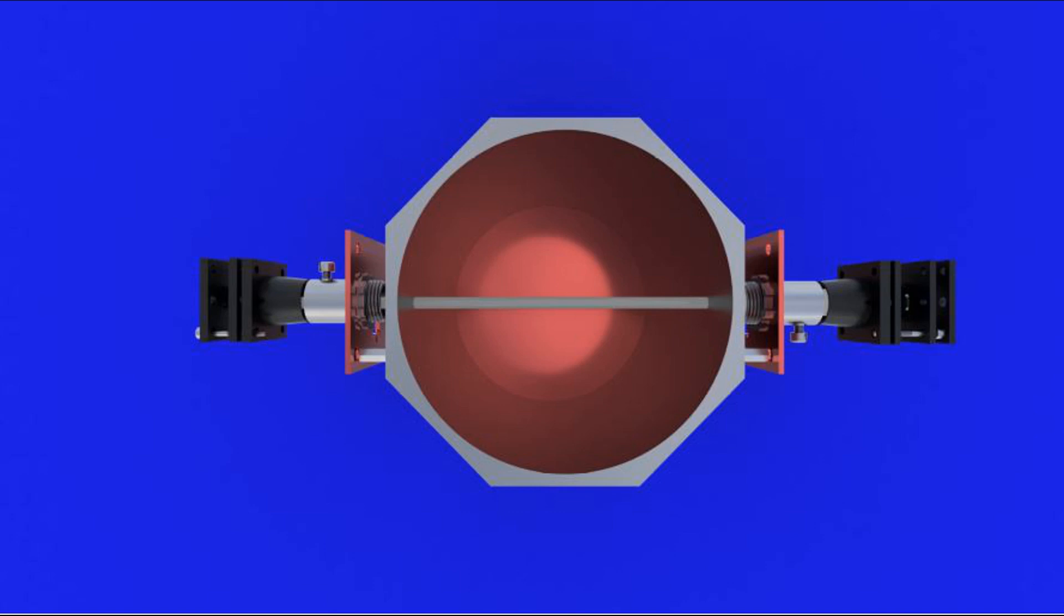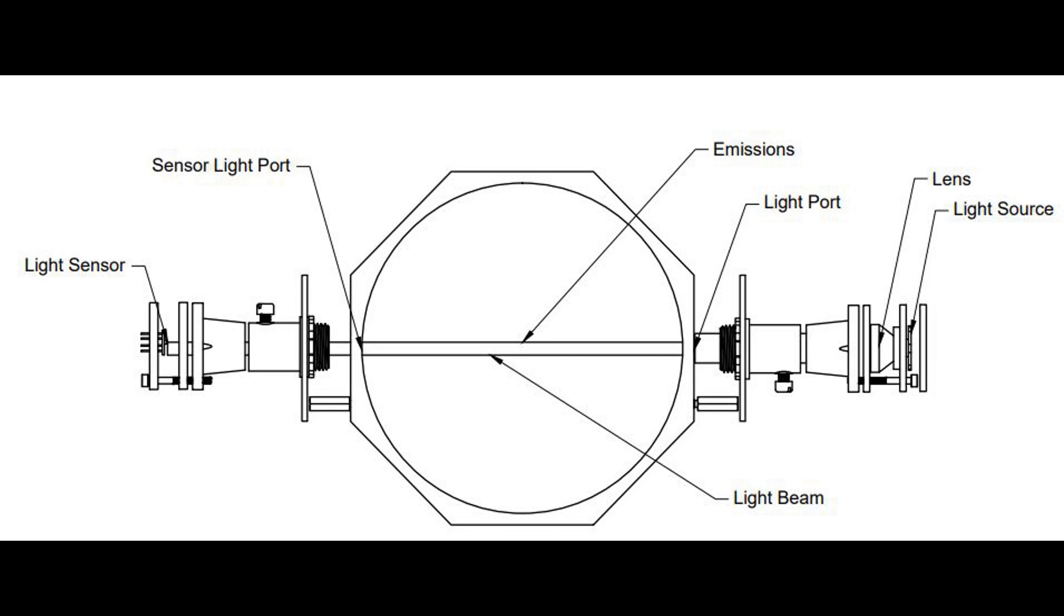Another diagram is here. It's the same image with more descriptive points. On the right, you have the light source, a lens shining on a light port through the chimney, which is smoke and hot gases, through another port, then to a light sensor. This system will measure opacity of smoke and is relatively straightforward.